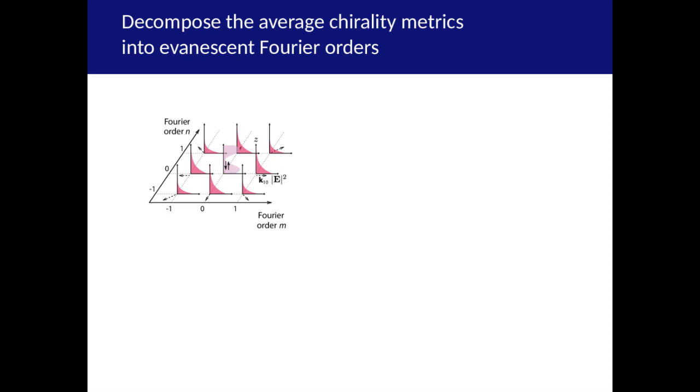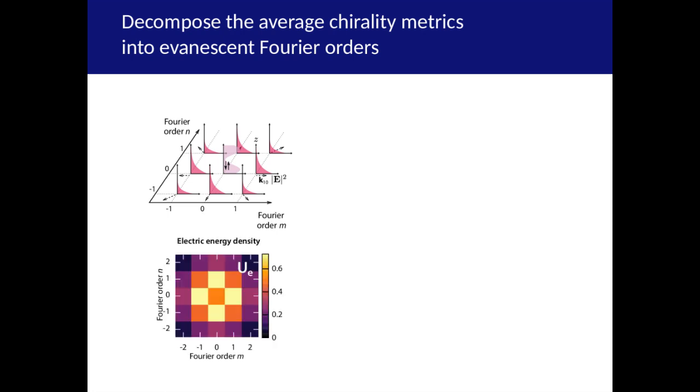So why does this happen? To understand this, we perform a Fourier decomposition of the near field. Only the central 0-0 order consisting of the incident and reflected or transmitted waves is propagating. Because the array is sub-wavelength, all higher orders are evanescent. We can now consider the contributions of each Fourier order to the average intensity metrics. If we look at the electric energy density, almost all of it comes from the few central Fourier orders. The lowest evanescent Fourier orders have the strongest contribution.